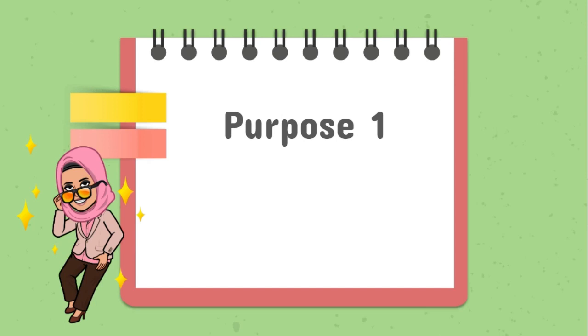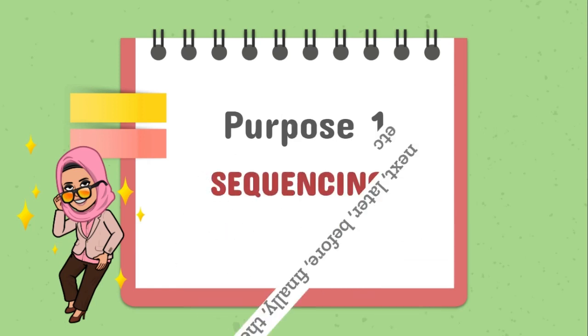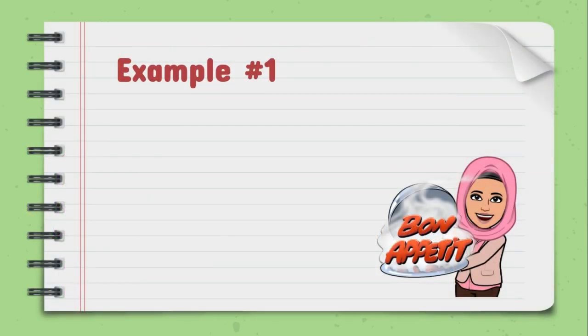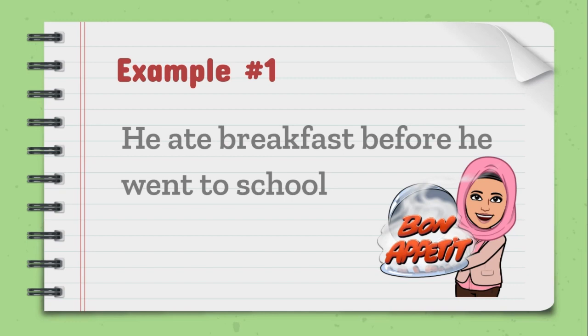Purpose number one is to show sequencing in a paragraph. The connective words are next, later, before, finally, then, etc. For example, he ate breakfast before he went to school.